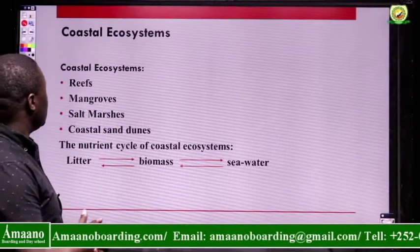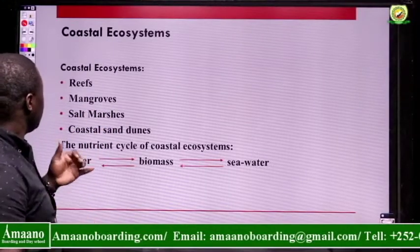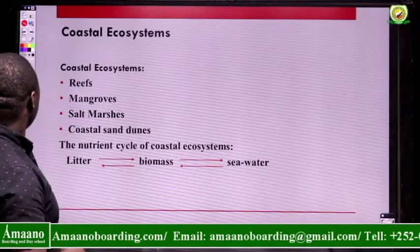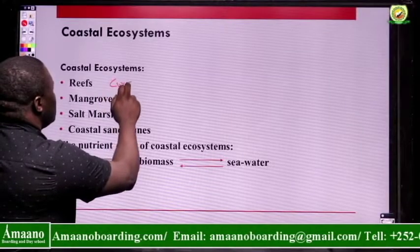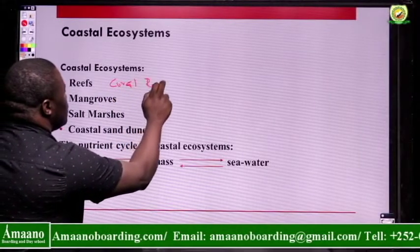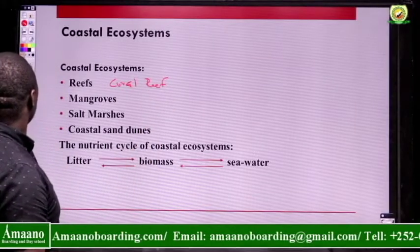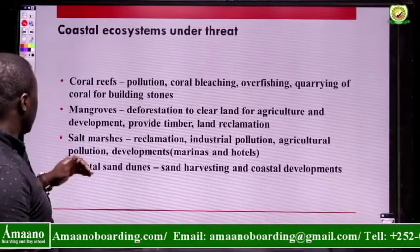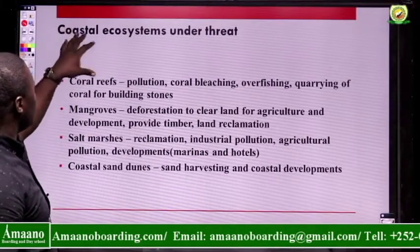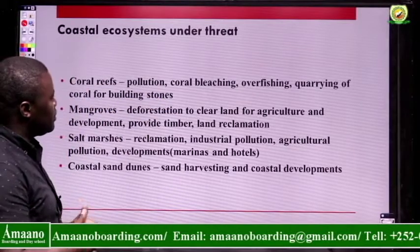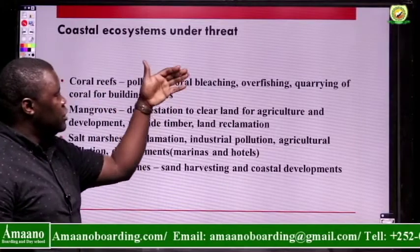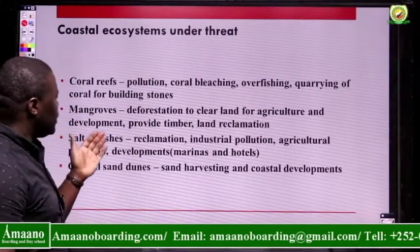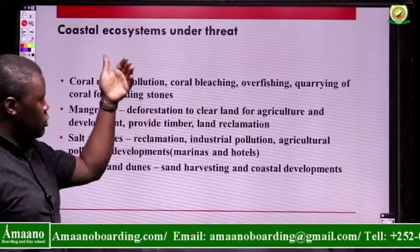Coastal ecosystems covered include the coral reef ecosystem, mangrove ecosystem, salt marshes ecosystem, and coastal sand dunes. Coral reef ecosystems face threats such as pollution, coral bleaching, overfishing, and quarrying for coral as building stone. Mangroves face threats of deforestation to clear land for agriculture.